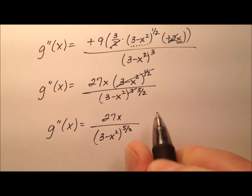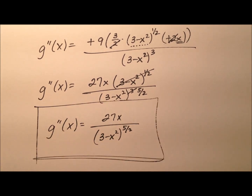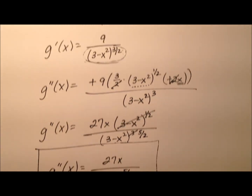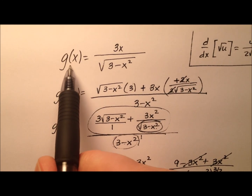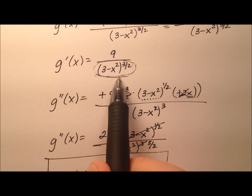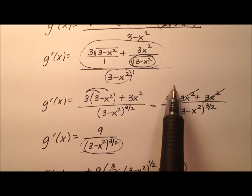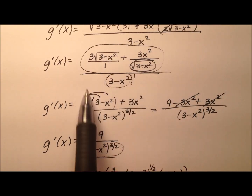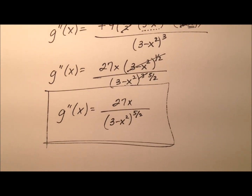So the second derivative comes down to 27x all over 3 minus x squared raised to the power of 5 halves. That's the second derivative of our original function g, whose first derivative we found here after quite a considerable amount of simplification.